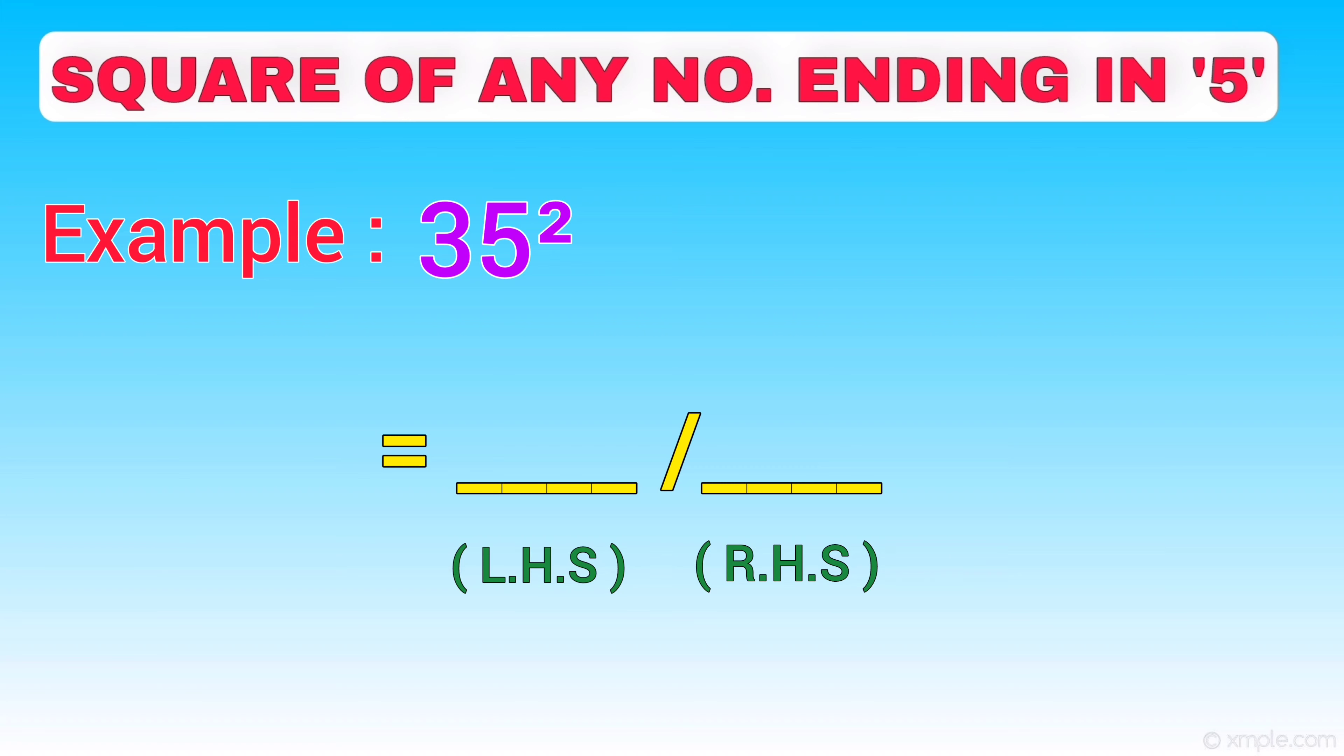On the right hand side, we write down the square of 5, that is 25. On the left hand side, we multiply the digit in the tens place by its next number. That is, 3 multiplied by 4 is equal to 12.